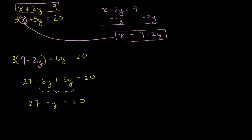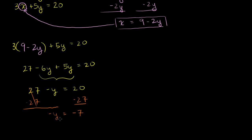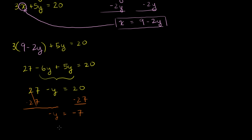Let's subtract 27 from both sides. The 27s cancel out, and you're left with negative y is equal to 20 minus 27, which is negative 7. Then multiply both sides by negative 1, and we get y is equal to 7.